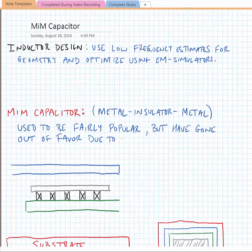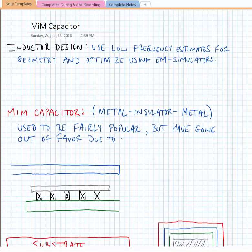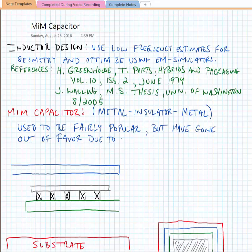When we're doing a basic inductor design, oftentimes we can use a low-frequency estimate based on the geometry, and we can optimize it using EM simulators. And if you're interested in finding where you can do these low-frequency estimates, I'll put a few references here. So the greenhouse calculations are very good to do these low-frequency approximations for inductance. And they were in Transactions on Parts, Hybrids, and Packaging, Volume 10, Issue 2, in June of 1974. And my own master's thesis related to using these calculations to estimate performance in spiral transformers. And that was from August of 2005.